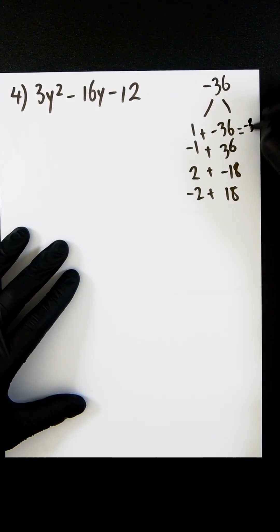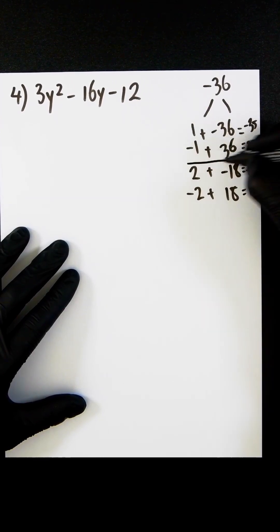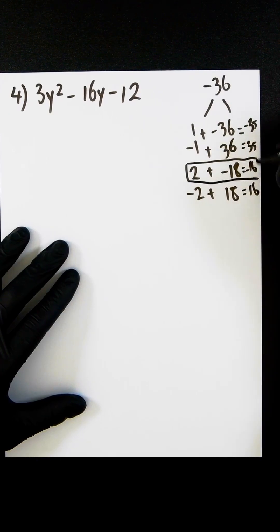So this is going to be minus 35, this is 35, this is minus 16, and this is 16. So this is the pair we're looking for.